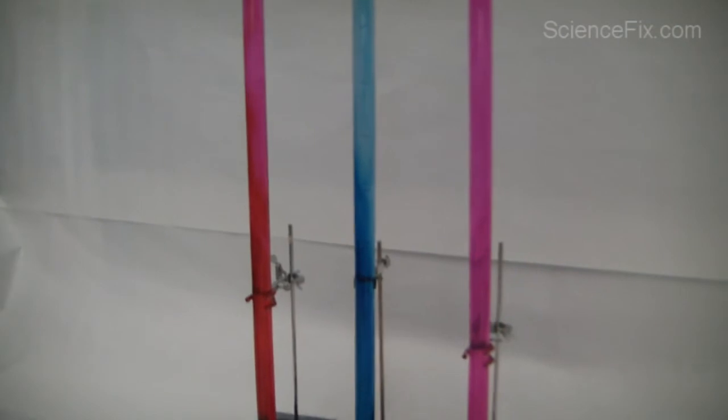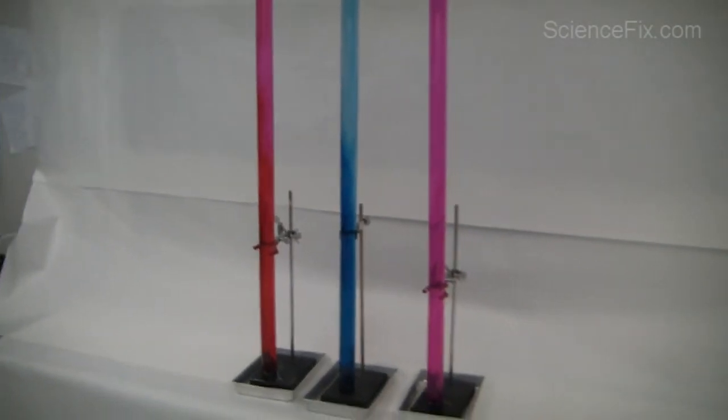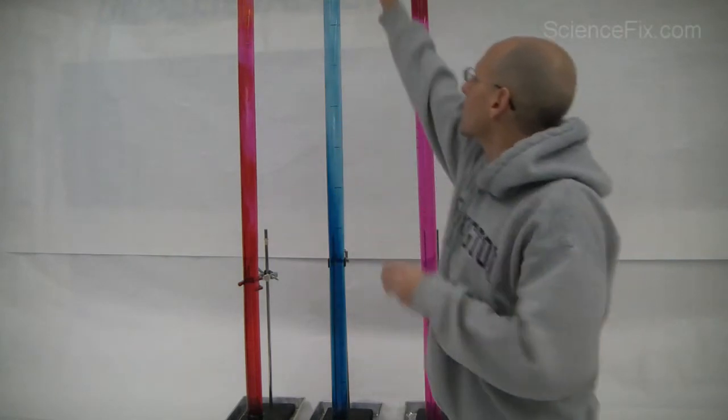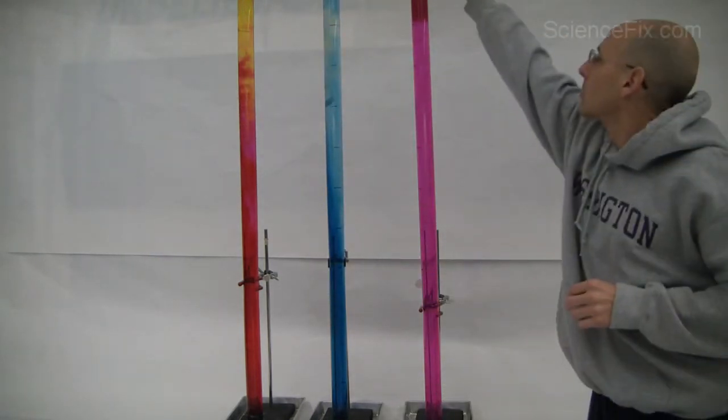Here are three tubes, and each tube has mainly water in it, and there's another chemical in each of the tubes. An Alka-Seltzer tablet is dropped into each of the tubes, and let's see what happens.